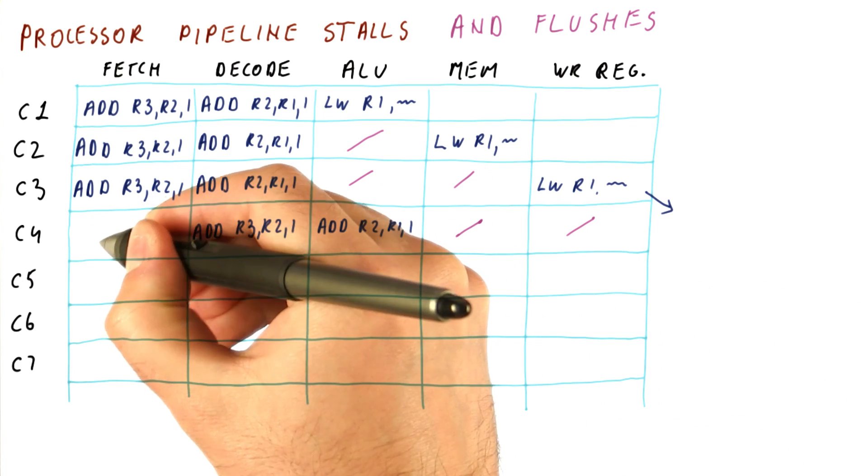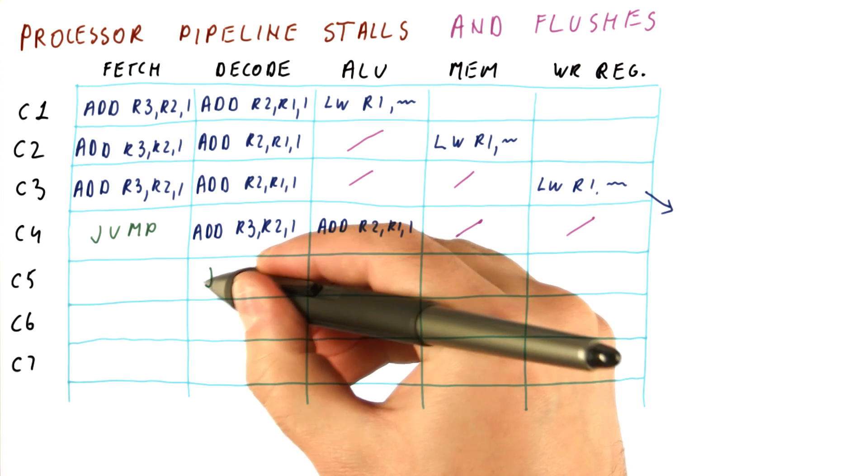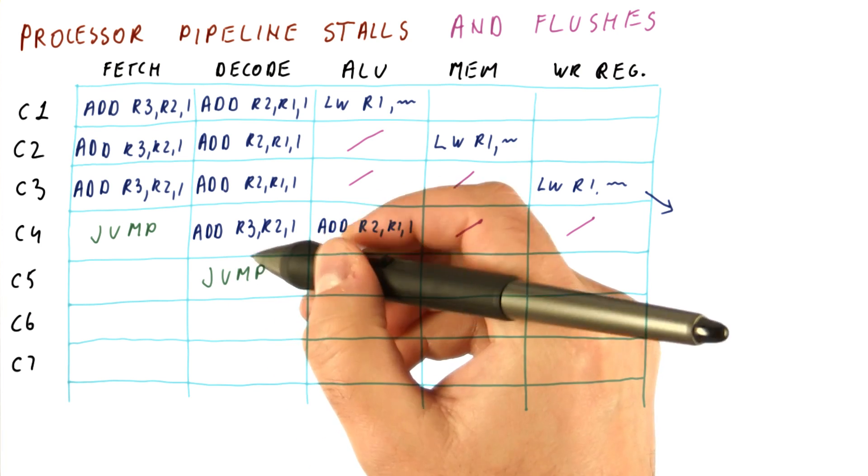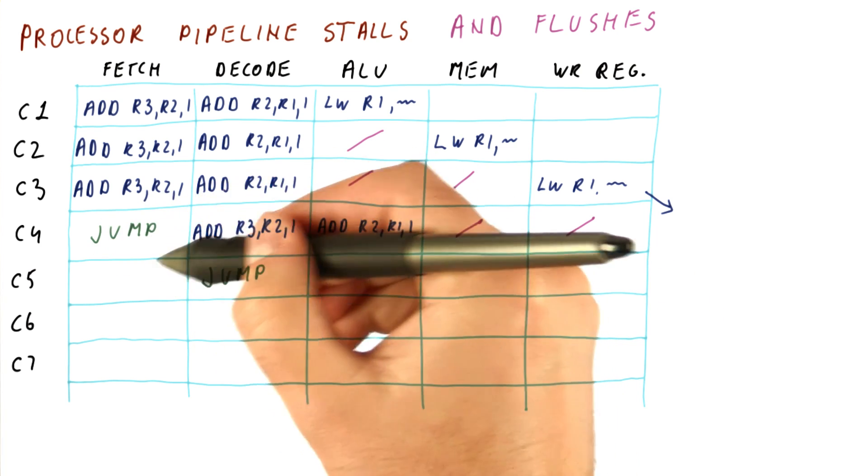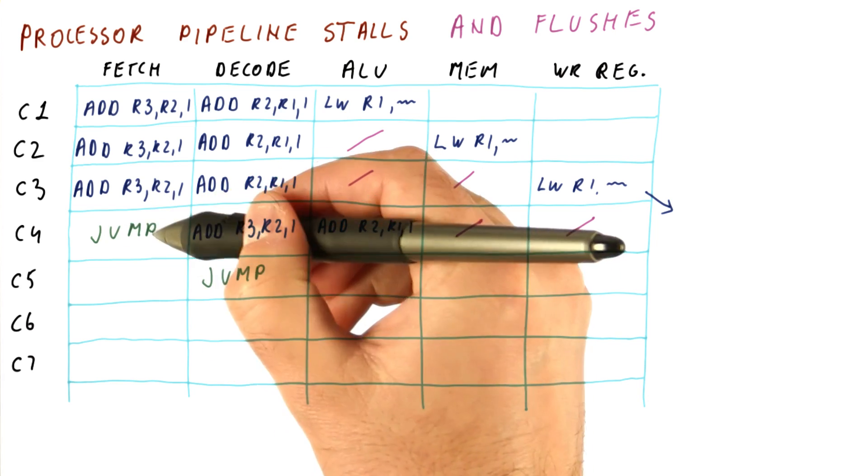Suppose that the instruction we fetch here is a jump instruction. Next cycle, this jump moves here. The problem is, we fetch this jump, but in this cycle here, we didn't even know what it is.